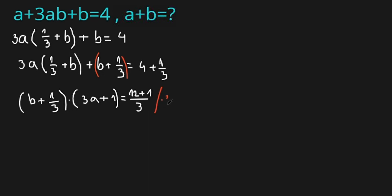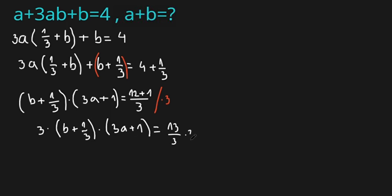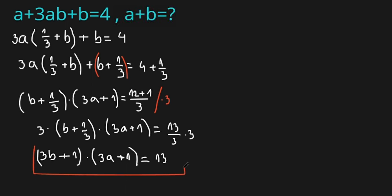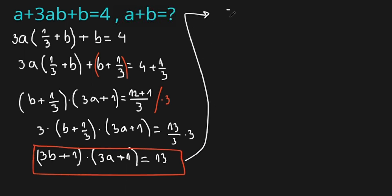Now let's multiply both sides by 3: 3 × (b + 1/3) × (3a + 1) = (13/3) × 3. This gives (3b + 1)(3a + 1) = 13.